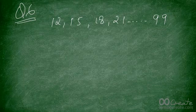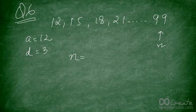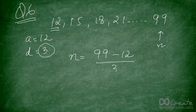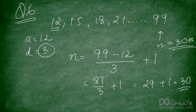Look at this arithmetic sequence starting at 12 with a common difference of 3, so a = 12 and d = 3. At what position does 99 occur? Position = (99 − 12) / 3 + 1 = 87 / 3 + 1 = 29 + 1 = 30. So 99 occurs at the 30th position.